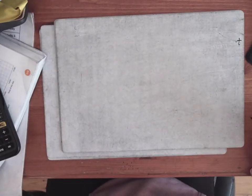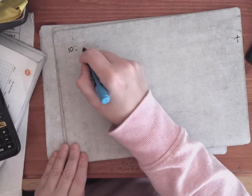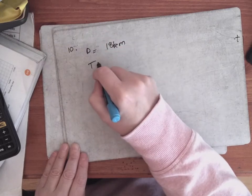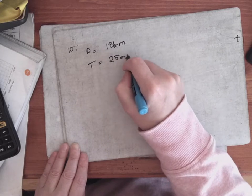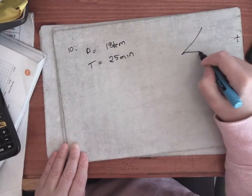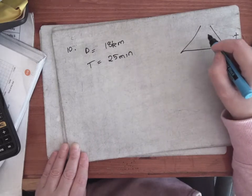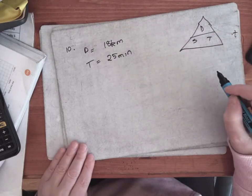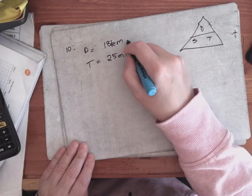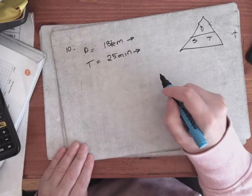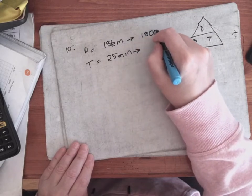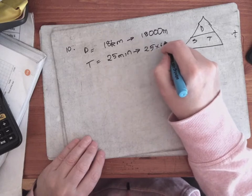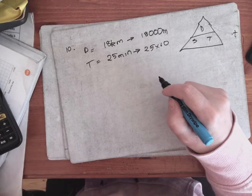Number ten: a distance of 18 kilometers was traveled in 25 minutes. Find the average speed in meters per second. Speed equals distance over time, and we want the answer in meters per second, so distance must be in meters and time in seconds. There are 1000 meters in a kilometer, so that's 18,000 meters. There are 60 seconds in a minute, so time is 25 multiplied by 60, which is 1500 seconds.